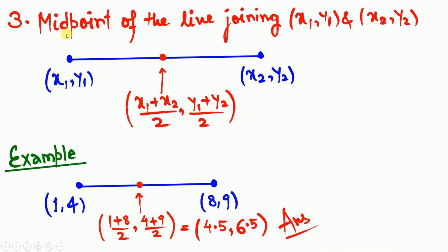In the third topic, we calculate the midpoint of a line joining (x1, y1) and (x2, y2). To find the midpoint, simply take the average: (x1 + x2)/2, (y1 + y2)/2. Can you tell me which type of mean this is? I taught in the previous video that there are three types of means — please comment whether this is arithmetic mean, geometric mean, or harmonic mean.